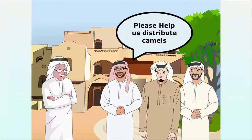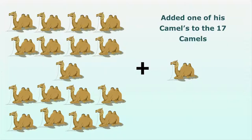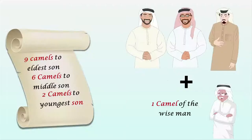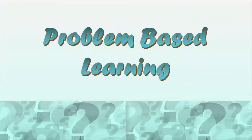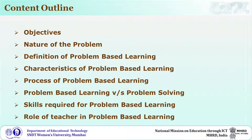So what they did was go to a wise man and ask him to help distribute the camels. The wise man thought over it, analyzed the situation, and then gave a solution that satisfied all three. What he did was add one of his own camels to those 17 and distributed according to the father's will. Are you getting what we are trying to do? We are incorporating a problem into our learning process — and that is our method today: problem-based learning.